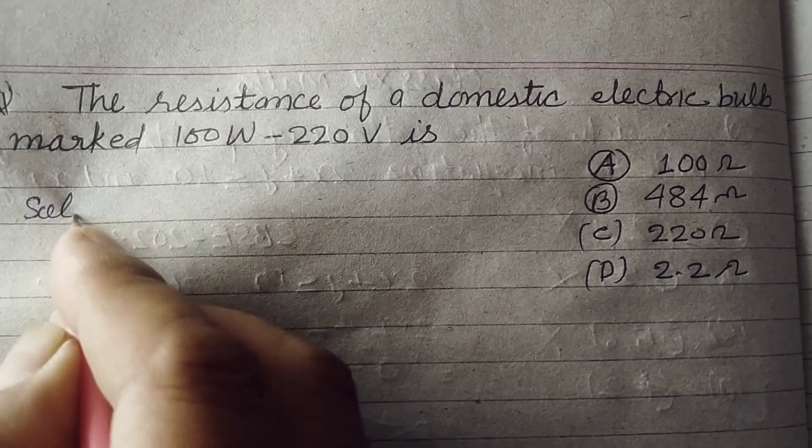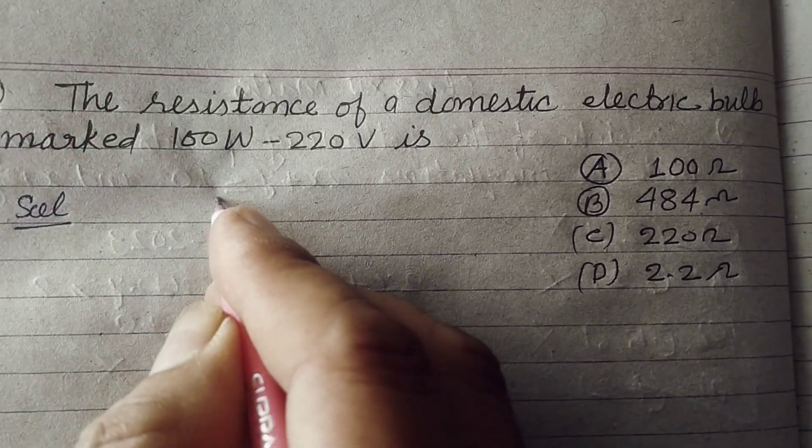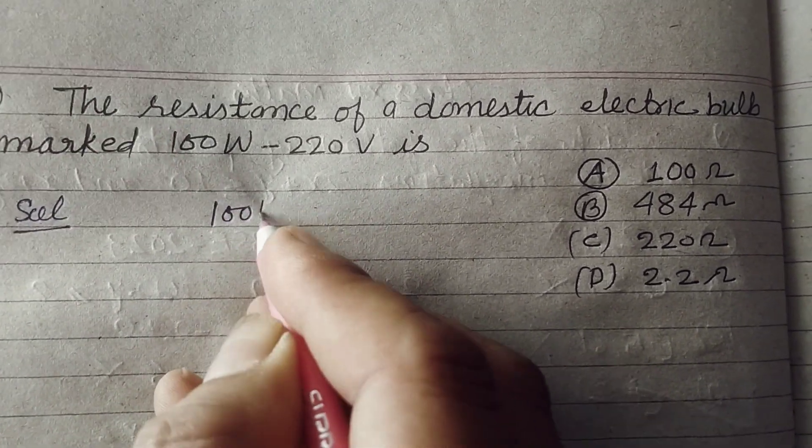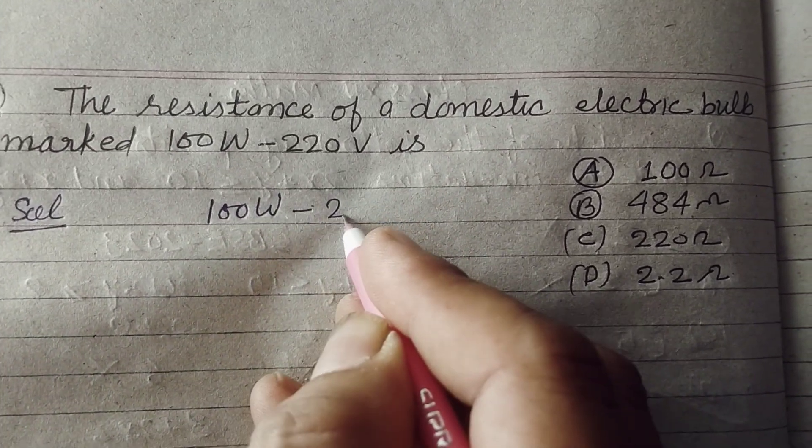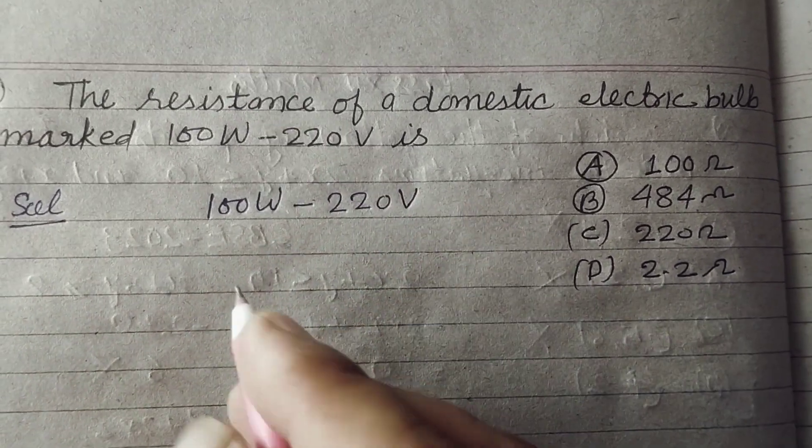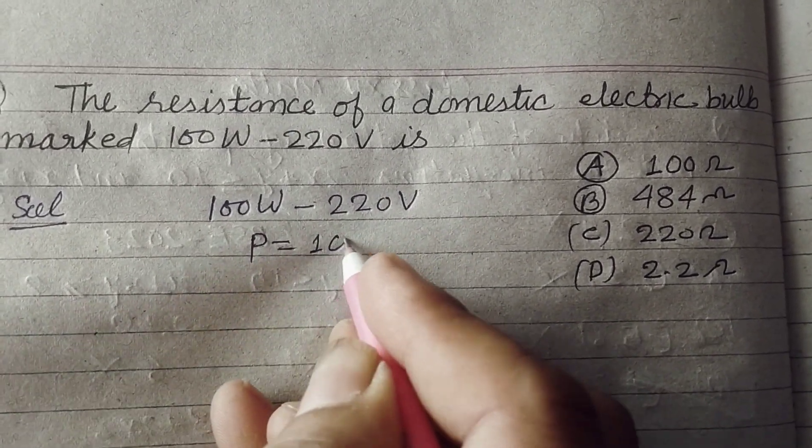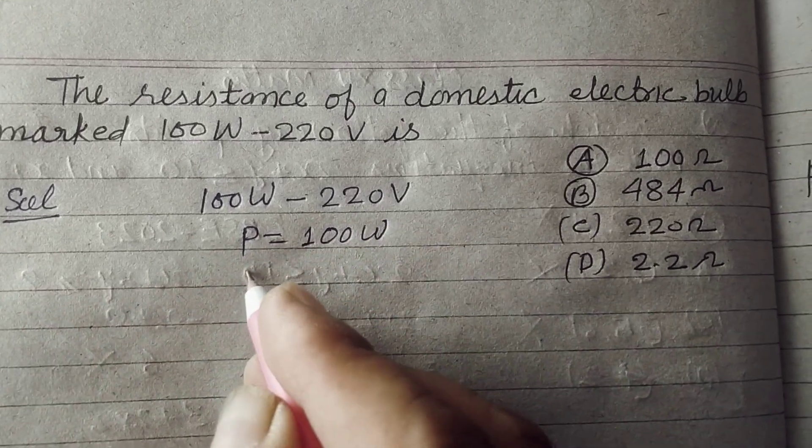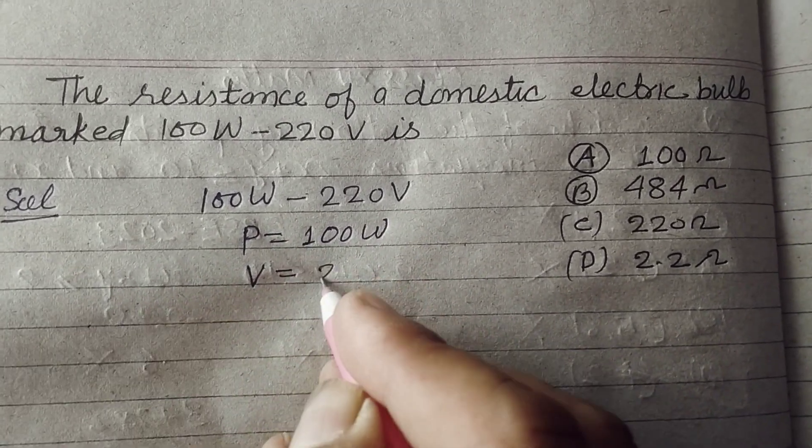So students, here it is given that the bulb is 100W-220V. So here the power of the bulb is 100W and voltage is 220V.